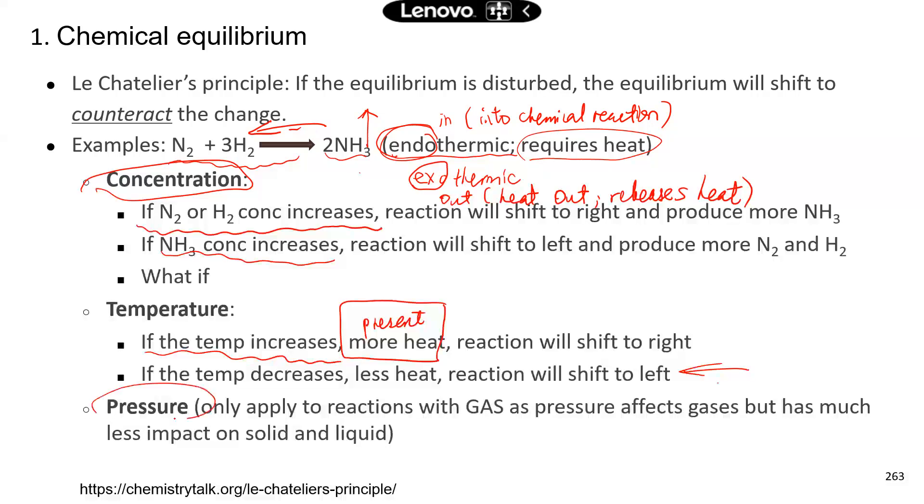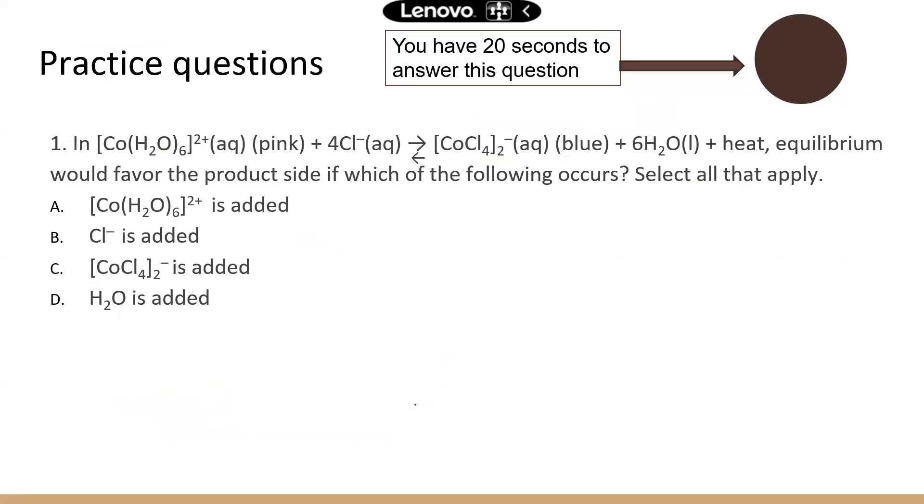Okay, last one, pressure. So this only applies to reactions with gas chemicals, like I said earlier. But it doesn't have too much impact on solid and liquid. So most of the questions about chemical equilibrium will probably focus on solid and liquid. So if you have a limited amount of time, I would say focus on concentration and temperature, how those factors can affect chemical equilibrium.